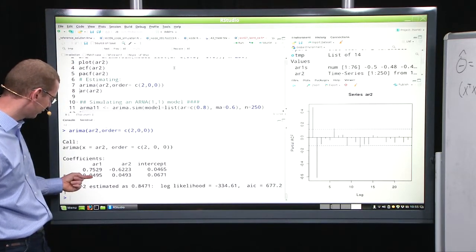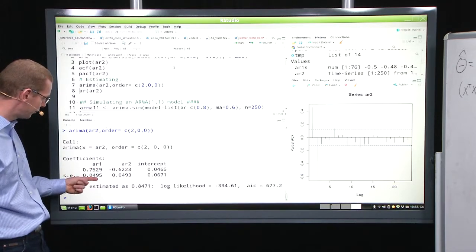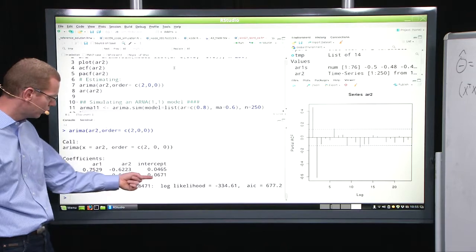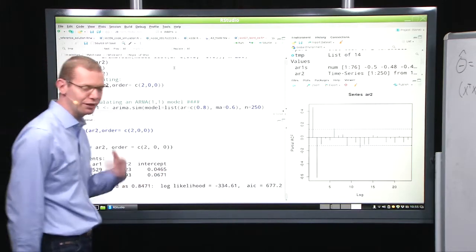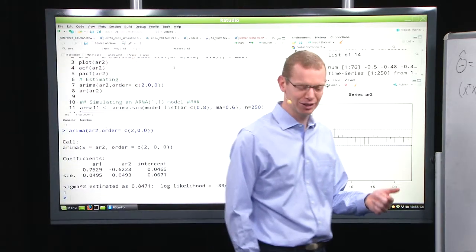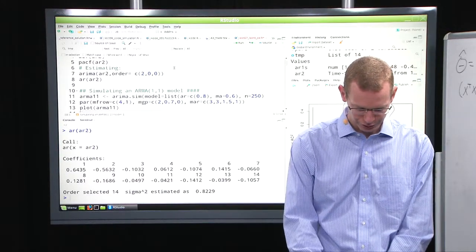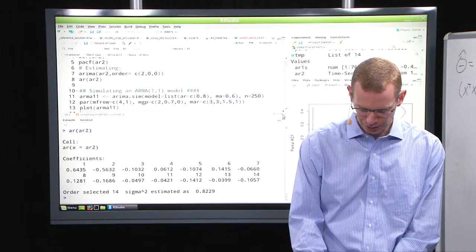You have the standard error as the second line here. So the AR coefficient is much greater than 2 times the standard error, likewise for the AR2. But the estimated intercept is less than the standard error of that.